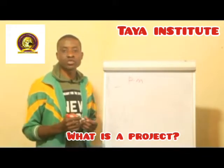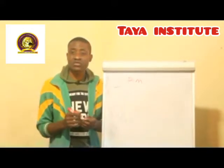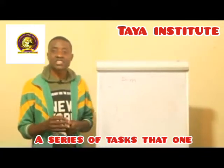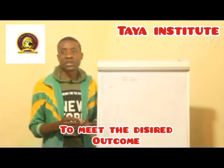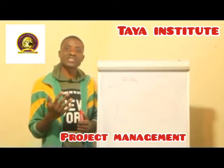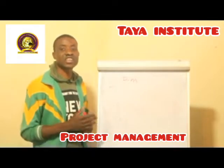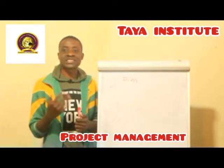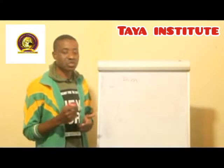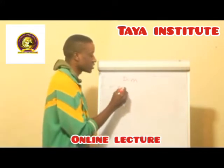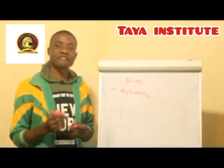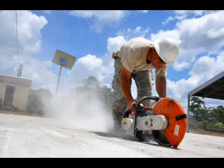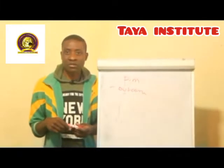What is a project? A project is a series of tasks that one can undertake in order to meet the desired outcome. Always understand that in a project, you always have outcomes. Those tasks that you undertake, or that a team might embark on, at the end of the day, must have the desired outcome.